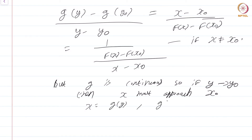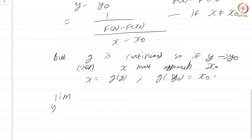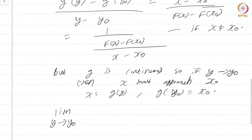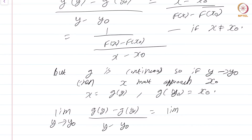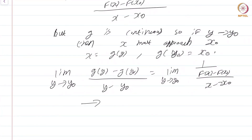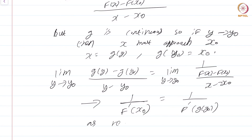And of course g(y₀) = x₀. So the limit as y approaches y₀ of the Newton quotient g(y) − g(y₀) over y − y₀ is the same as the limit as y → y₀ of 1 divided by [f(x) − f(x₀)] / [x − x₀]. From the remark that as y → y₀, x → x₀, this quantity inside just approaches 1 divided by f prime of x₀, which is 1 divided by f prime of g(y₀), as required.